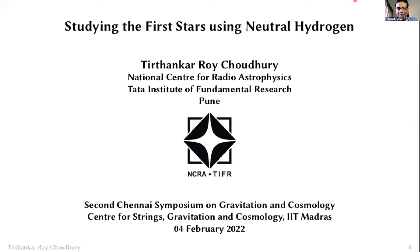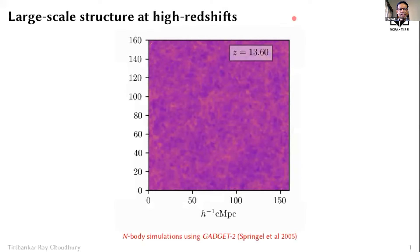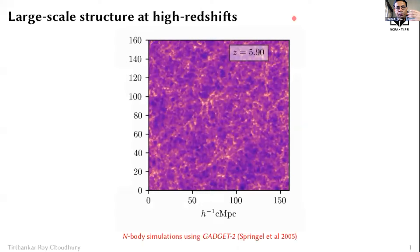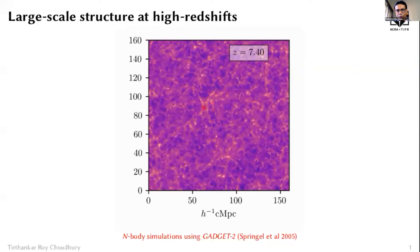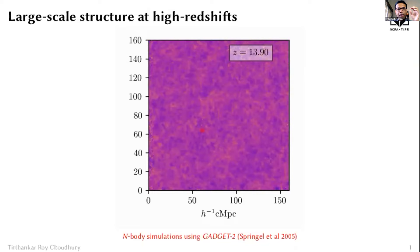Let me start with a movie which many of you would be familiar with — this is showing the large-scale structure, particularly at high redshift, from a simulation. The universe progresses from a very homogeneous state to something where structures become quite prominent. You can see cosmic webs and filaments, and whitish points where dark matter will collapse and form halos — these are the places where galaxies and stars would eventually form.